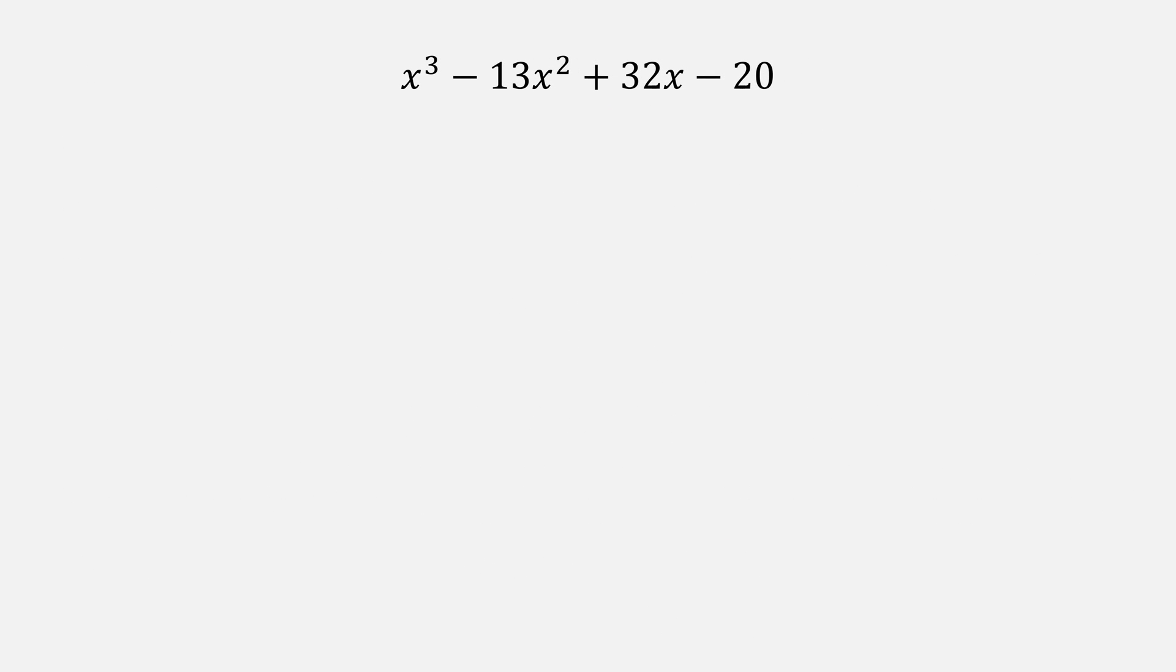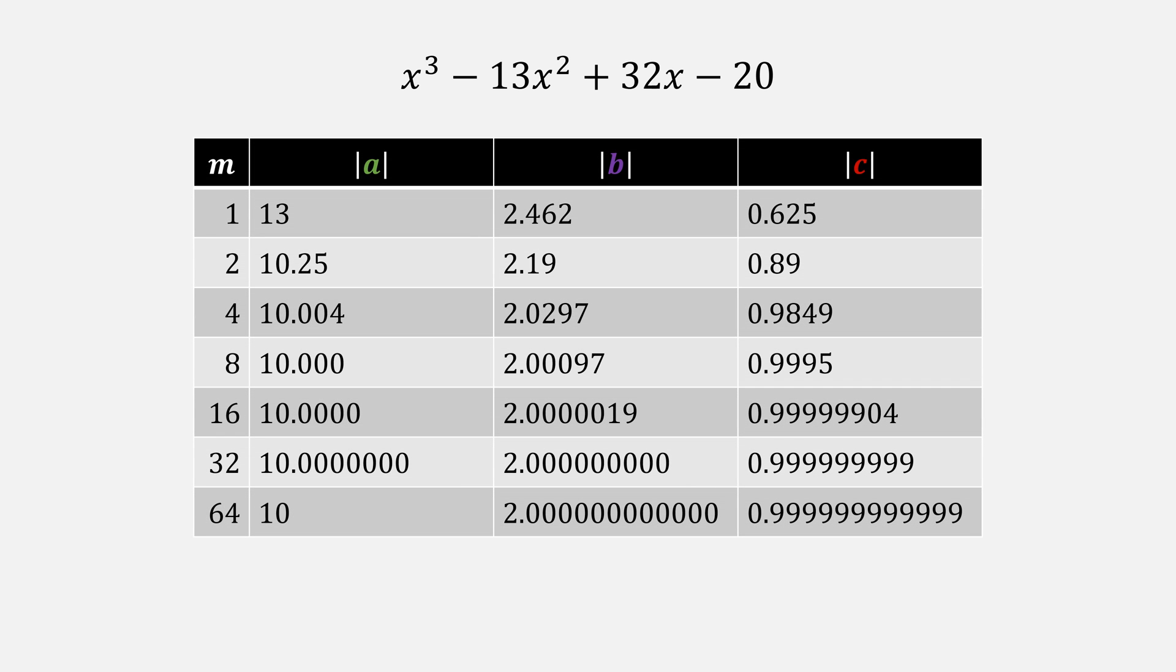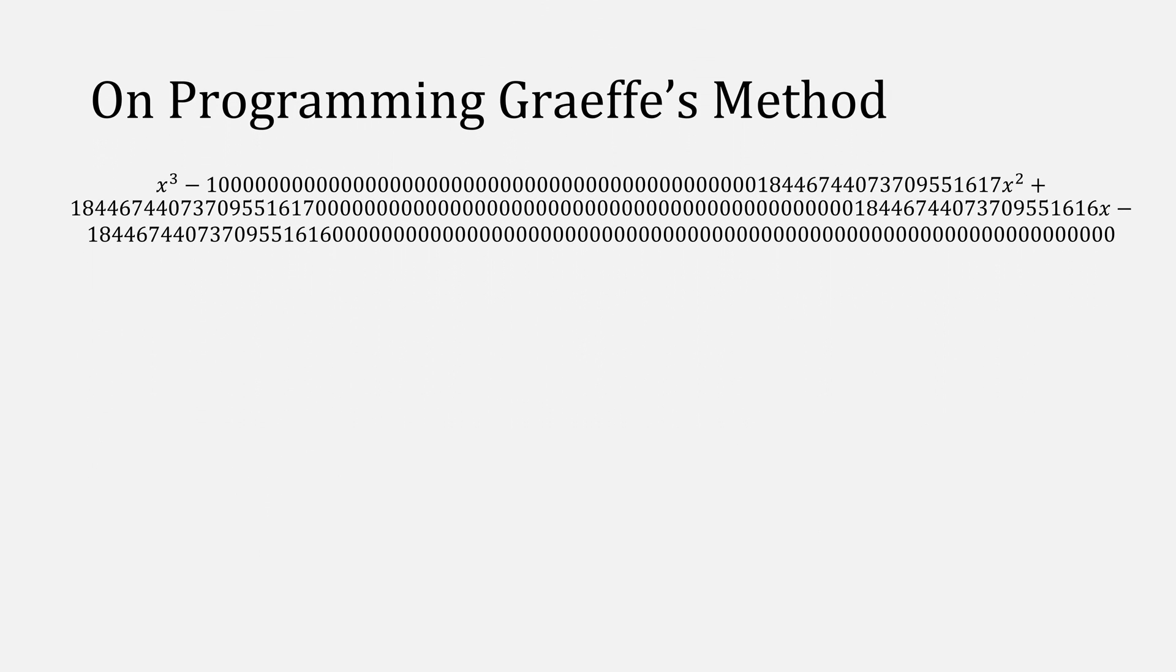You could just let m be a large value like 64 or 128, or try to solve for the roots after every iteration of our root squaring technique. And whenever our distance becomes less than some preset epsilon, stop the iteration process.